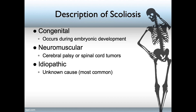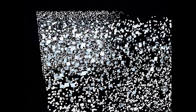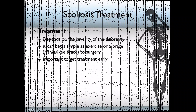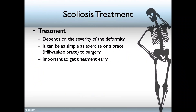Other ways to describe it: if it's a problem in the spine itself — some deviation within the spinal column — we call that a structural problem. But if it's something like from a musculoskeletal disorder, then we call that a non-structural cause or source of scoliosis. The treatment of scoliosis depends on the severity of the deformity. It can be as simple as exercising or a brace and can extend all the way to requiring surgical intervention. One of the most important factors is early diagnosis and treatment.